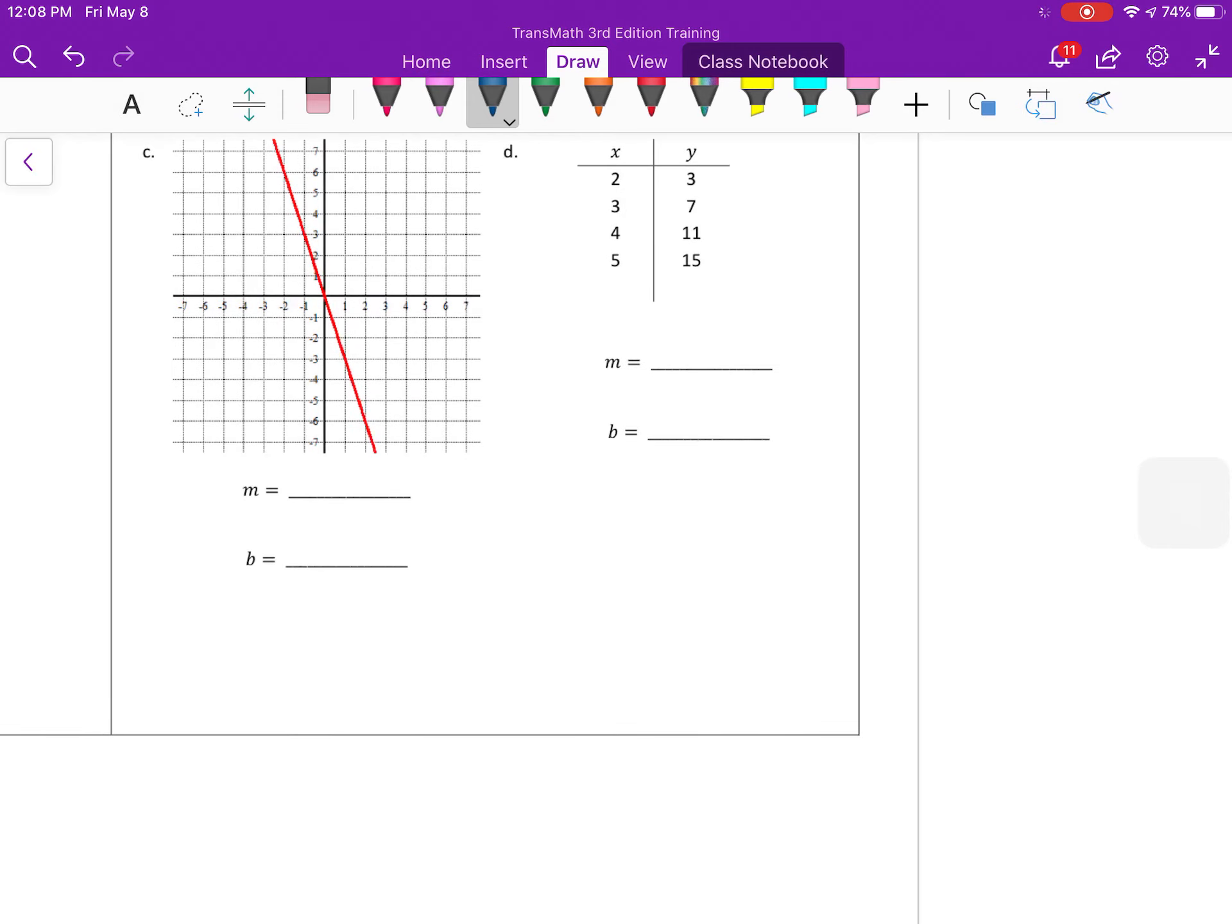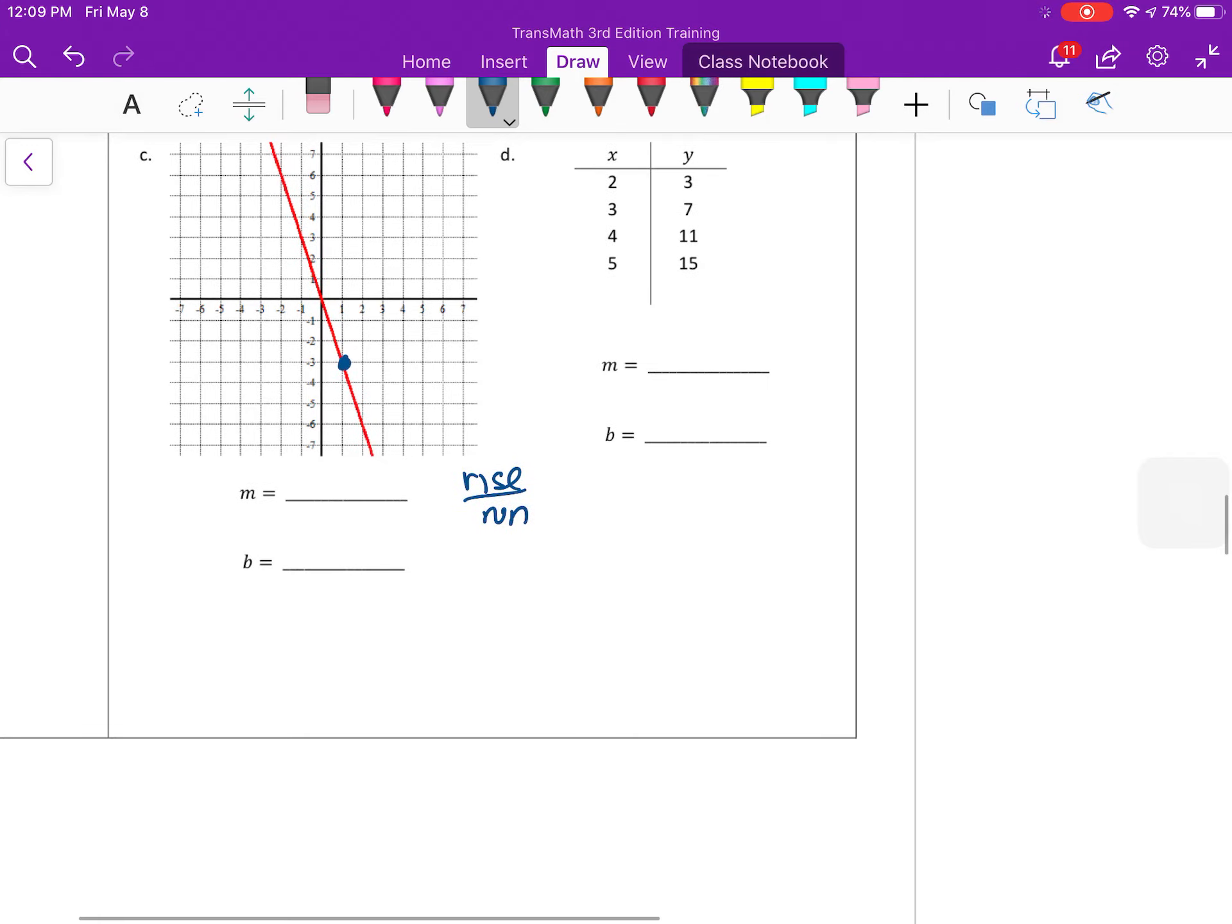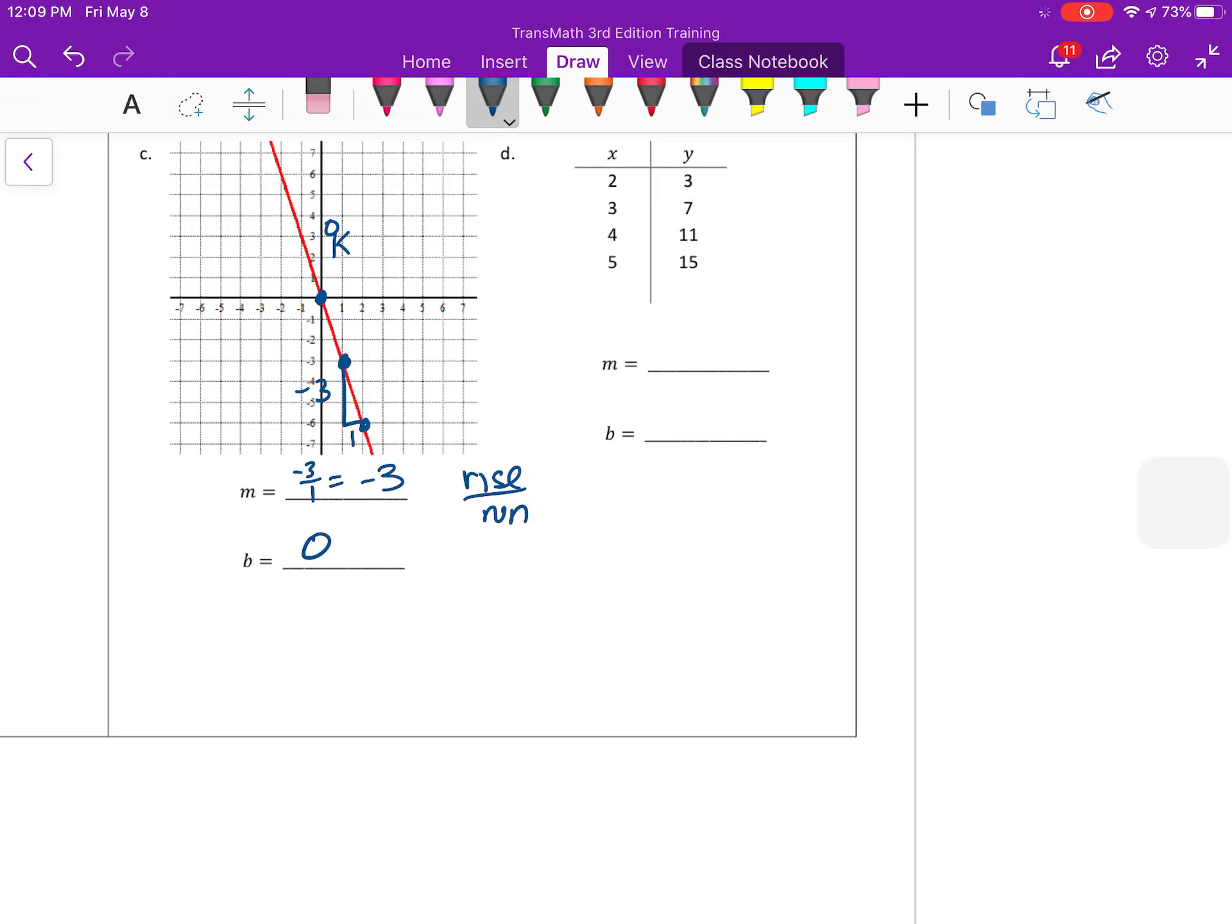Looking at a graph, we need to use rise over run for slope. Remember, we make that right triangle, so we pick two points that the line crosses. So I pick those two points, make the right triangle. This is going to be down 3, so negative 3, right 1. So slope of negative 3 over 1, or negative 3. Notice it is going downhill. If you think about a little person walking on that line, so your slope does have to be negative there. And then the y-intercept is where it crosses the y-axis, which is this one is at 0.